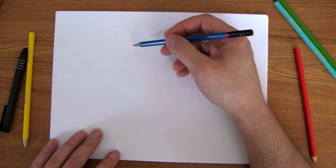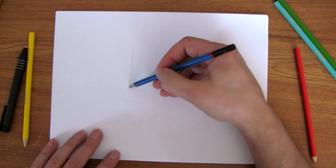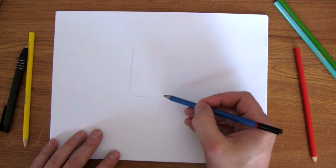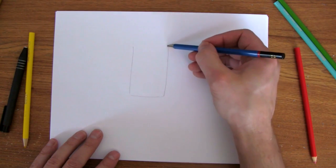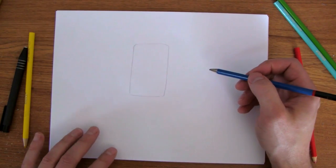All right, we're going to start by drawing kind of a rectangle. Lightly. I'm drawing it light so I can erase later.